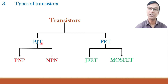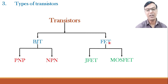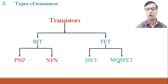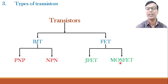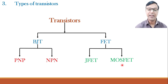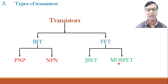BJTs may be further of two types: PNP transistor and NPN transistor. Field effect transistors are also of two types: JFET — junction field effect transistor — and MOSFET — metal oxide semiconductor field effect transistor. For a junction field effect transistor, you are applying electric field from the gate of the junction. Whereas for a MOSFET, there is a thin metal oxide layer at the gate of the transistor, and hence it is known as metal oxide semiconductor field effect transistor. JFETs and MOSFETs are further of two types each: P channel and N channel JFET, and P channel and N channel MOSFET.